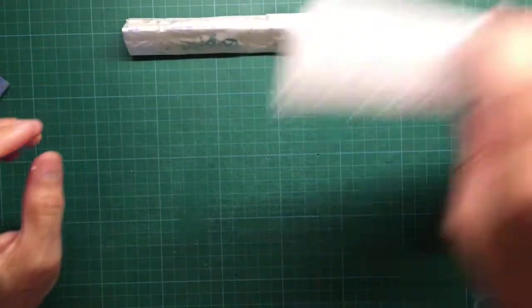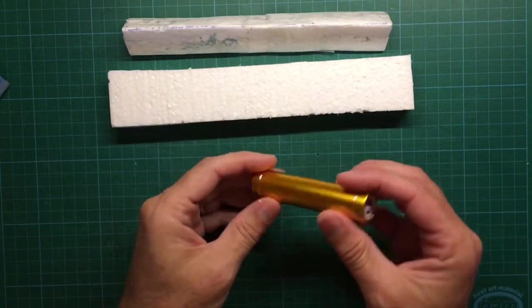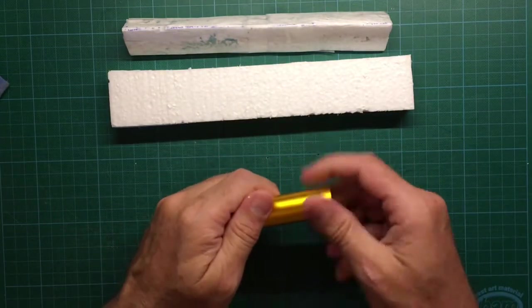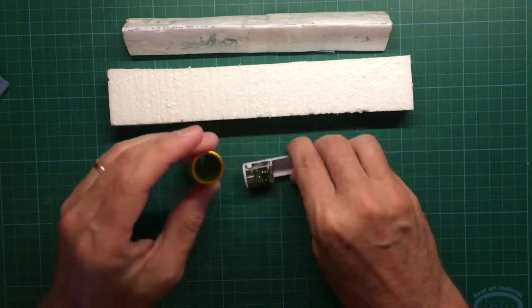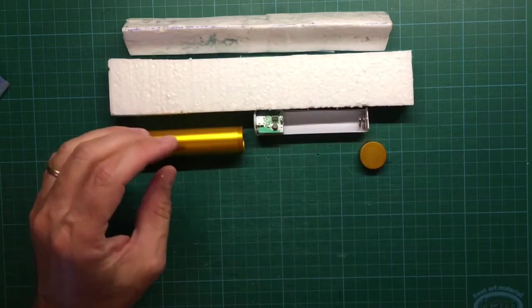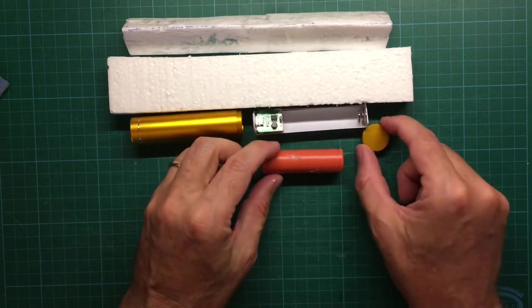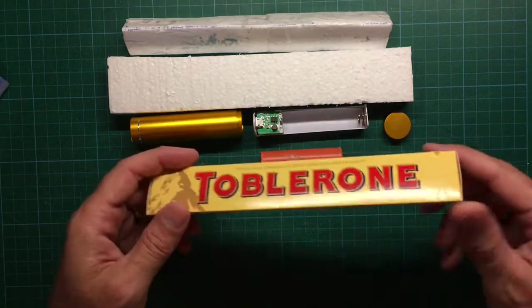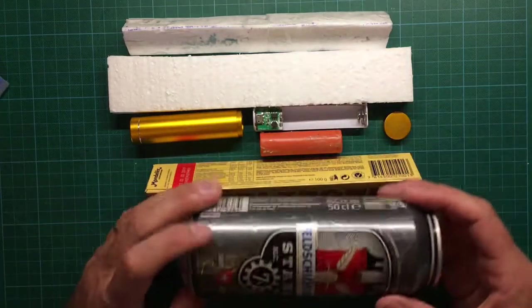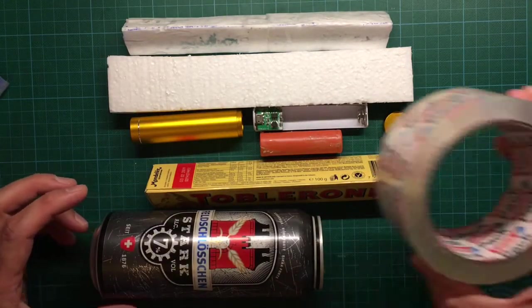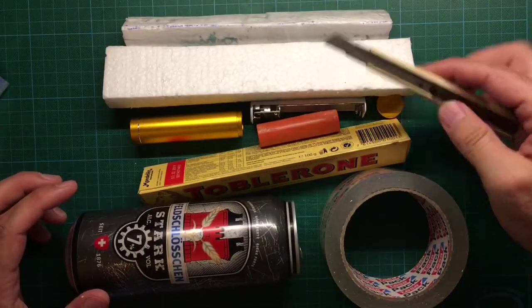You only need a few things to finish that project. First of all styrofoam, then you need a power bank. Those are commercially available and very cheap, less than two dollars. The corresponding lithium-ion cell, either salvaged from a laptop or a new one. A chocolate bar envelope, an aluminum can, beer or soda can, and some tape as well as a knife.